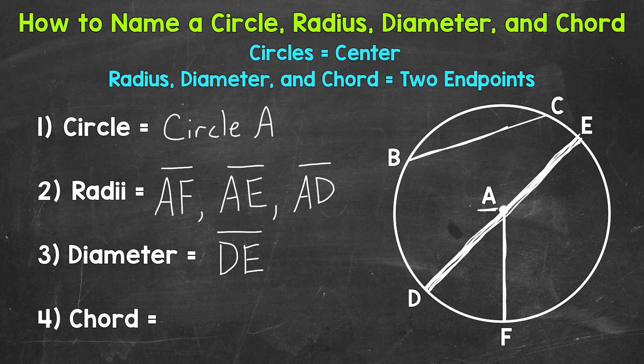We can go from point B on the circle to point C. So a line segment that connects two points on the circle. Just like when we name a radius and a diameter, we are going to use those two endpoints. This would be BC, the two endpoints, and then put the line segment symbol above them. That indicates we start at point B and have a line segment over to point C. That's an example of a chord and how you name a chord.